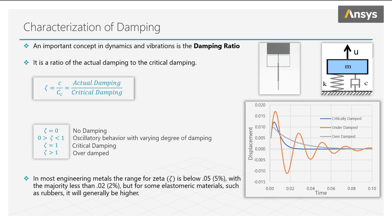With the damping ratio of zero, the behavior would be oscillatory with no decay in amplitude. If the damping ratio is between 0 and 1, the case is called underdamped and the behavior is oscillatory with the decay in the amplitude as shown by the orange curve.